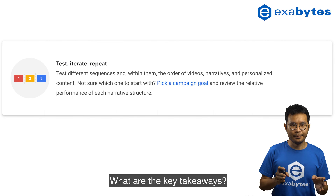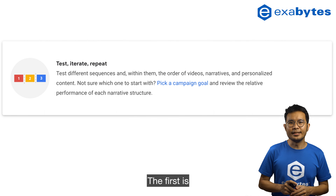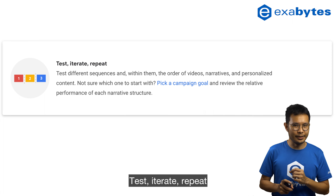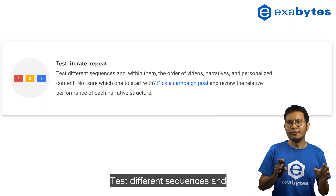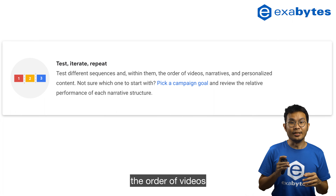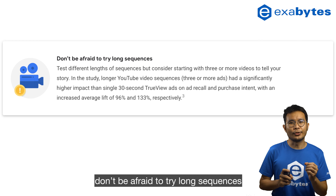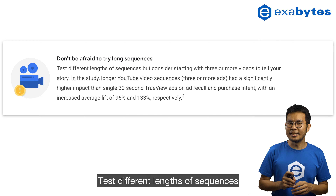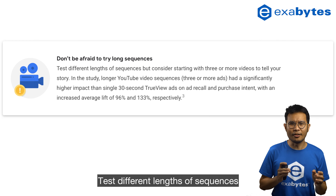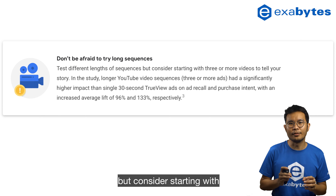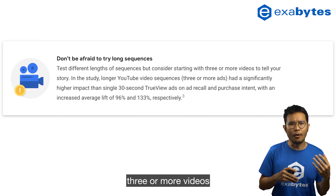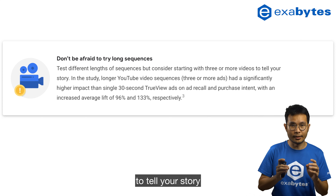What are the key takeaways? The first is: test, iterate, repeat. Test different sequences and within them the order of videos, narrative, and personalized content. Furthermore, don't be afraid to try long sequences — consider starting with 3 or more videos to tell your story.